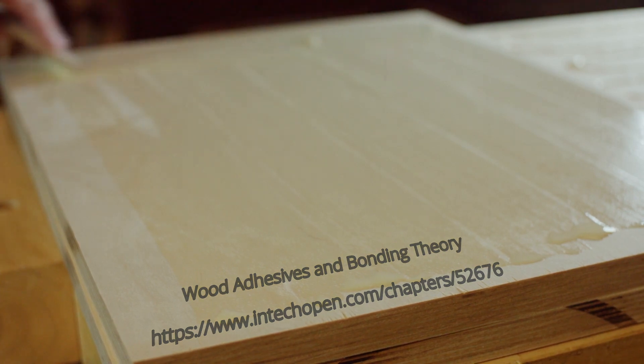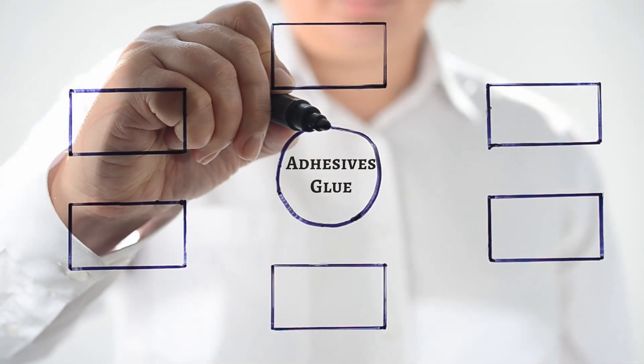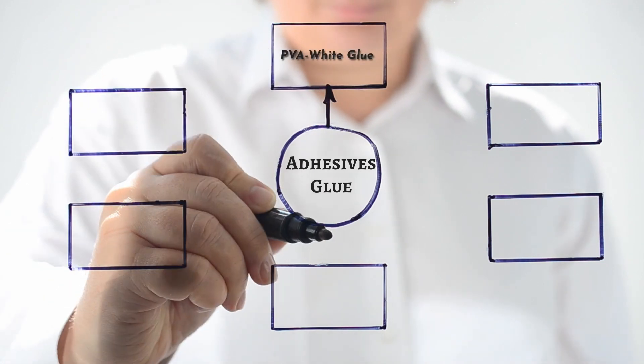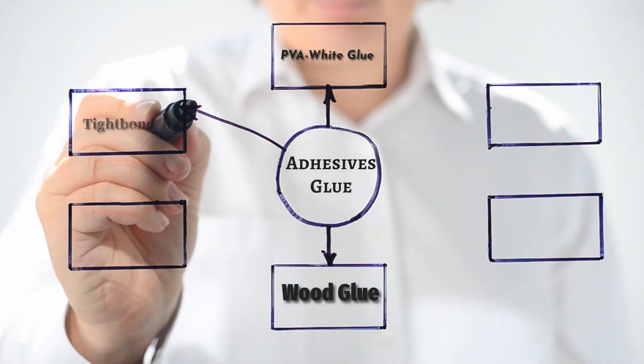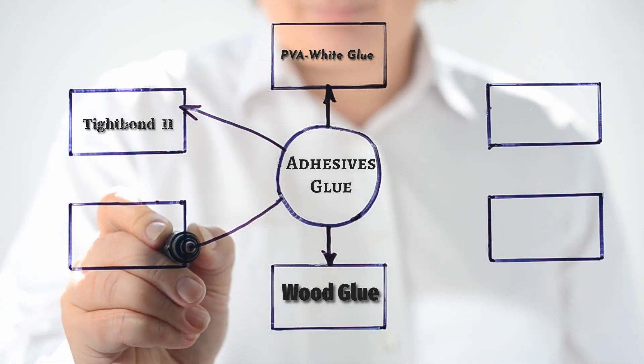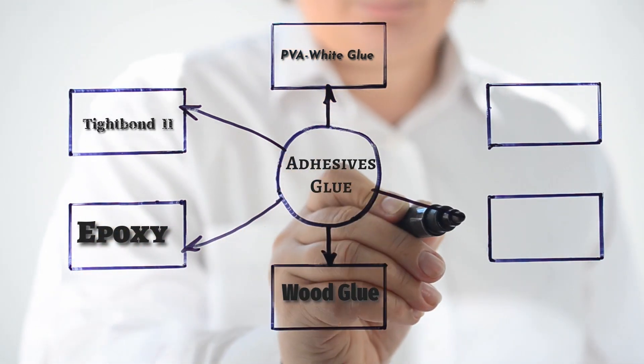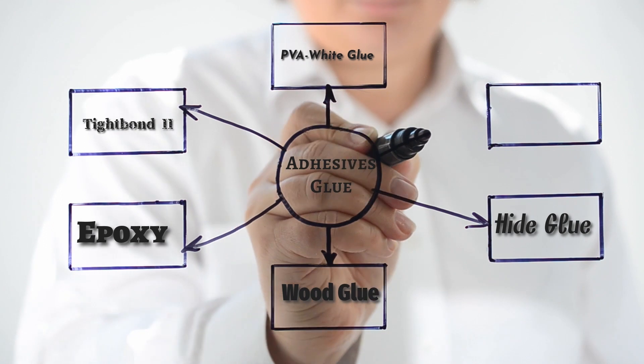I use many types of adhesives, including PVA glues like white glue, wood glues that are PVA glues with specific additives, and water-resistant formulas like Titebond II. Also, epoxy, cyanoacrylates or super glue, and various hide glue formulas.